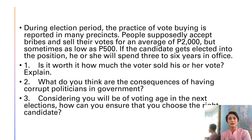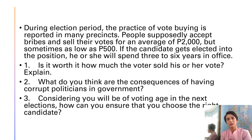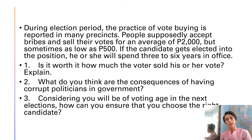The second question is: what do you think are the consequences of having corrupt politicians in government? This is where you look at the values that are lost when corrupt politicians are running the government. Third, considering that you will be of voting age in the next elections, how can you ensure that you choose the right candidate? Use the scientific method to study each candidate — their history, personalities, characteristics, education, background, and all their advocacies — so you can weigh each option correctly.